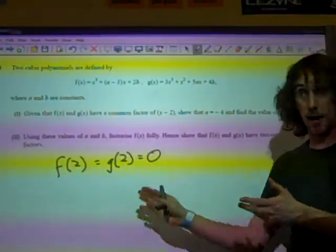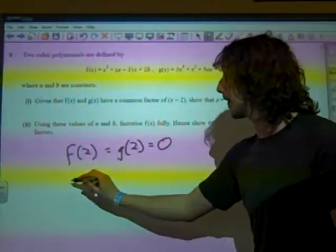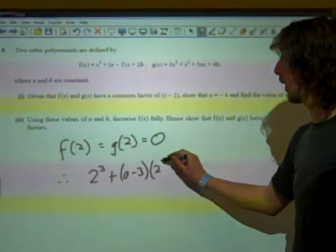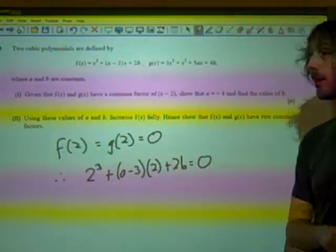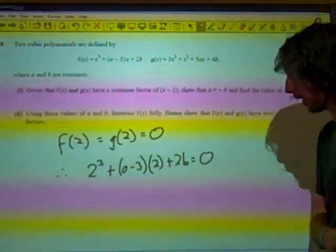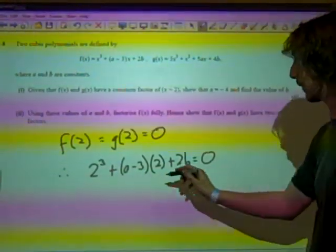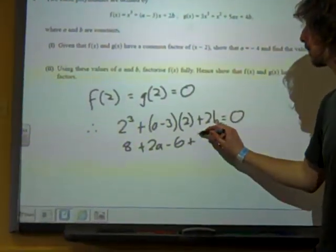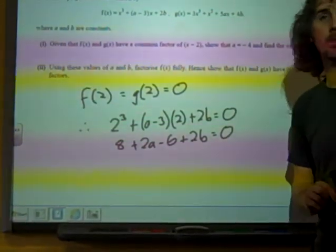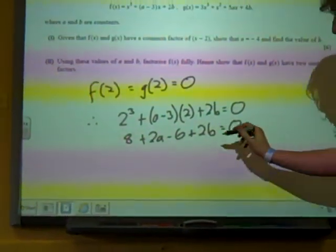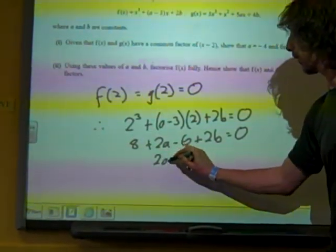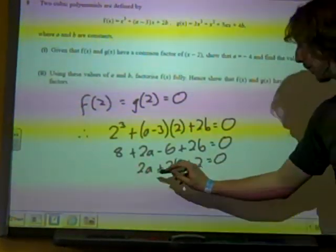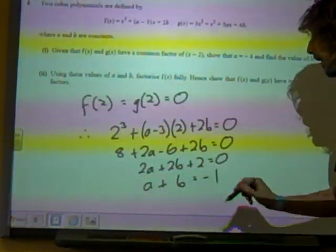So if we deal with these two things separately, the first thing we're going to do is say that 2 cubed plus a minus 3 times 2 plus 2b equals 0. Tidying that up a bit, we've got 8 plus 2a minus 6 plus 2b equals 0. So 2a plus 2b plus 2 is 0. If we divide everything by 2, a plus b is minus 1.